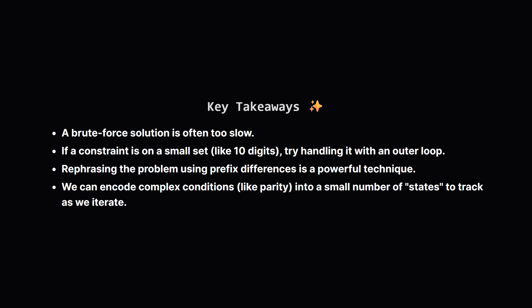So to wrap it all up, what are the big lessons here? First, if a brute force solution seems too slow, it probably is, and there's a better way. A huge clue was that the characters were limited to just 10 digits. When you see a small fixed set like that, think about looping through it on the outside, and solving a simpler problem on the inside. The trick of using prefix differences to analyze substrings is a classic and powerful technique. And finally we saw how we could take complex rules, like the odd and even constraints, and boil them down into a small number of states. This allowed us to keep track of just the information we needed in a very efficient way.